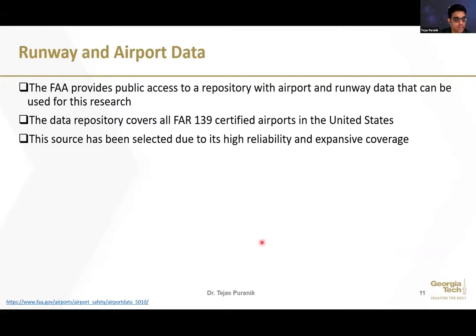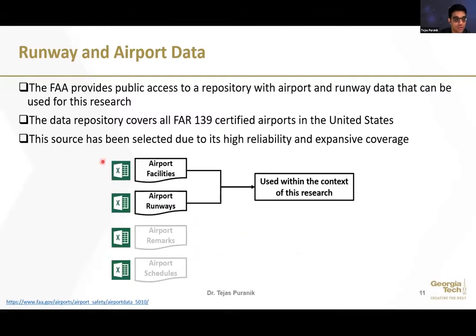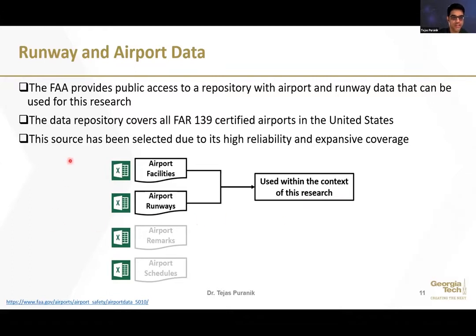The final source of data is runway and airport data accessed from the FAA website, covering all FAR 139 certified airports in the US. We used the airport facilities file and the airport runways file, merged together. This database provides information such as runway length, elevation, slope, published threshold crossing heights, and other static runway and airport information.